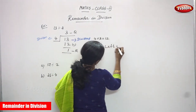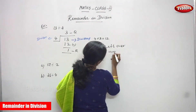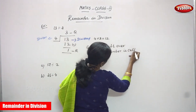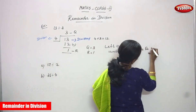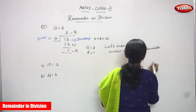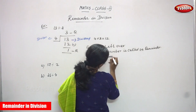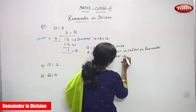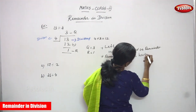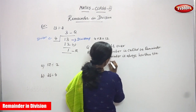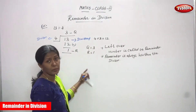The leftover number is called the remainder. Remainder is always less than the divisor. These are the rules — don't forget the rules while you do division.